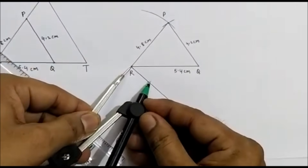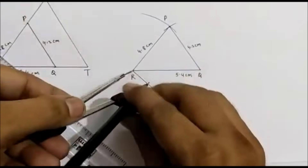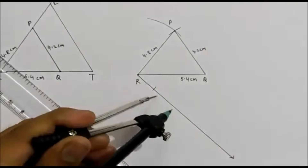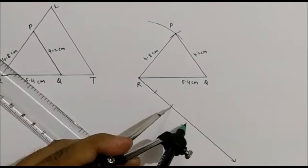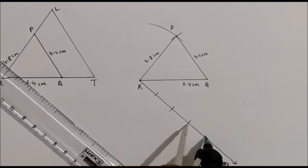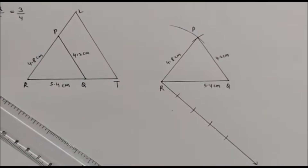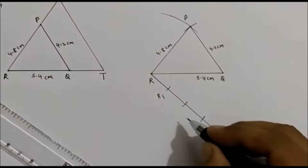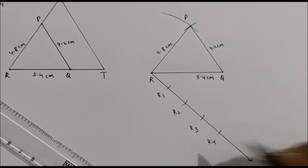Take a suitable distance, maybe around 1 cm or more. Cut 4 arcs and name this point R. So mark them as R1, R2, R3, and R4.